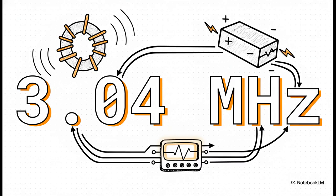And check it out! We plug everything in, turn it on, and our real-world measurement is 3.04 megahertz. That is incredibly close. It's awesome. It means our circuit is working just like the textbook says it should. The coil and capacitor are doing their thing perfectly together.